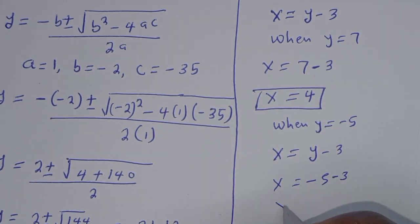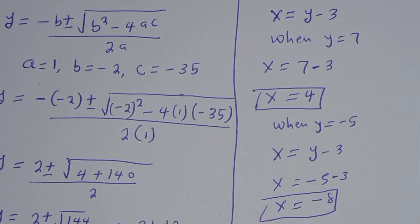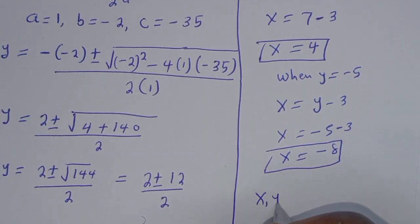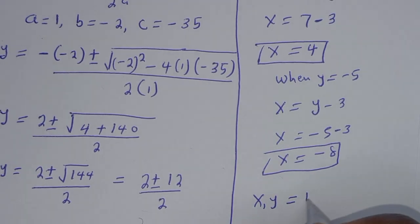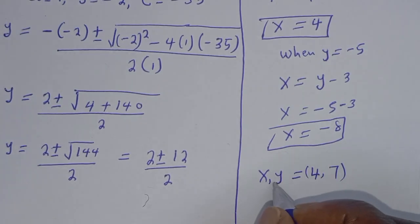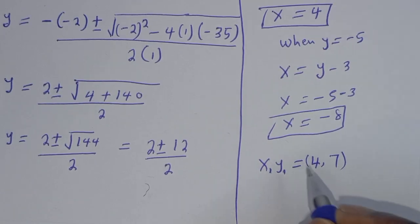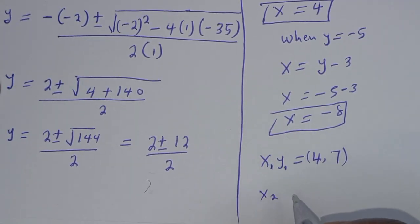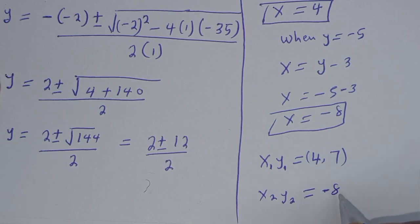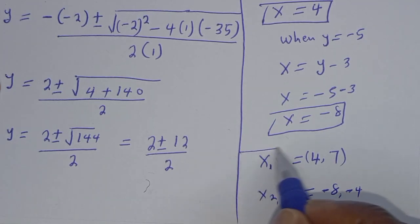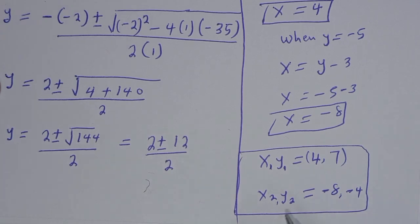When y equals negative 5, x equals negative 5 minus 3, so x equals negative 8. Therefore our answers are: (x, y) for the first case equals (4, 7), and for the second case (x₂, y₂) equals (negative 8, negative 5).